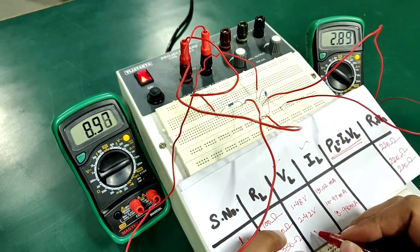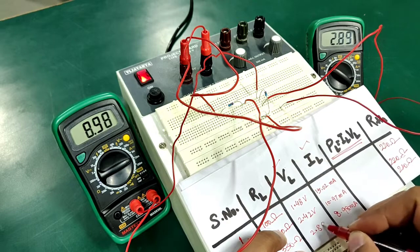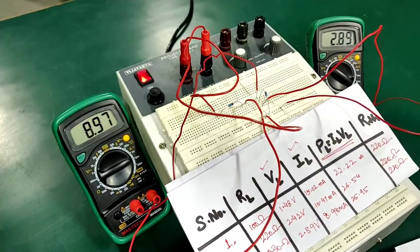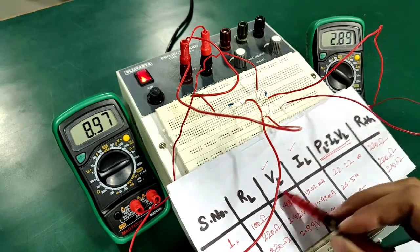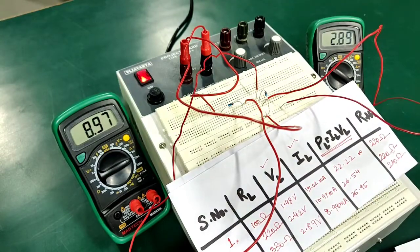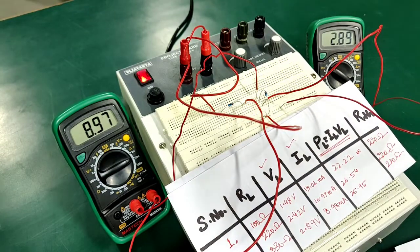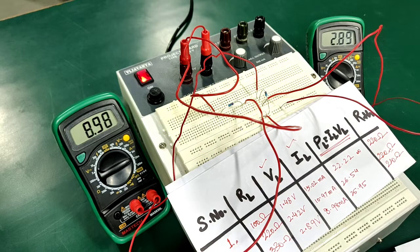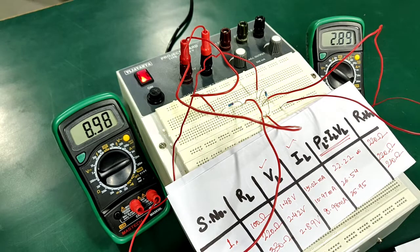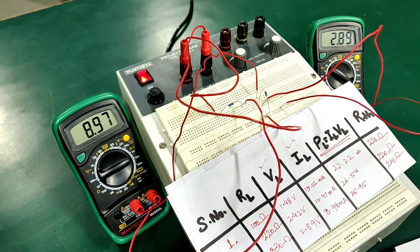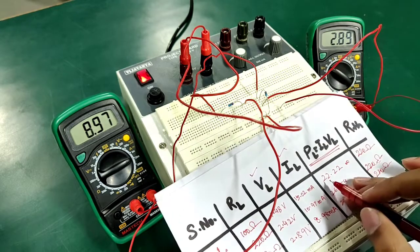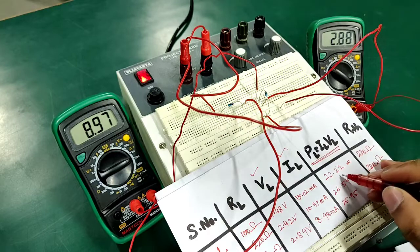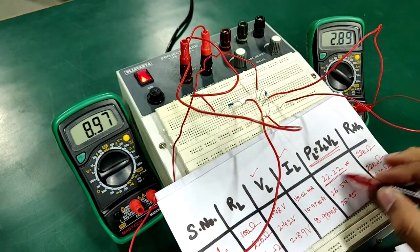In the next step for evaluation of power consumed by the load, I'm going to multiply these two values or you can also use the formula I squared RL. So now we have both these values VL and IL, so I'm going to use the formula VL into IL. And I can clearly see here that in first case the power is coming out to be 22.22 milliwatt.